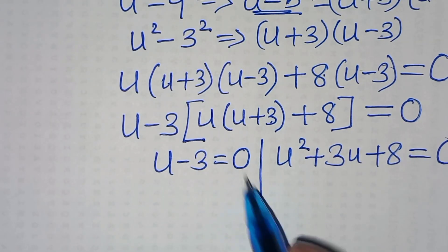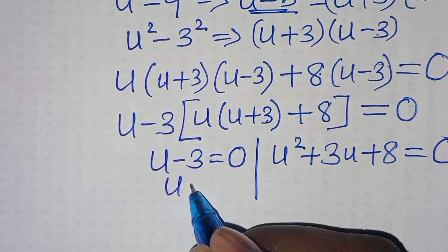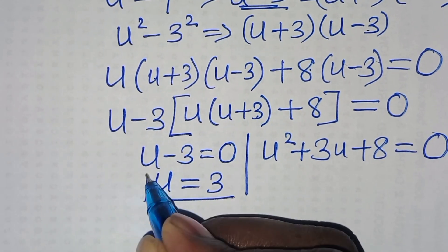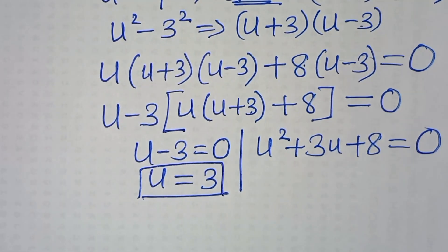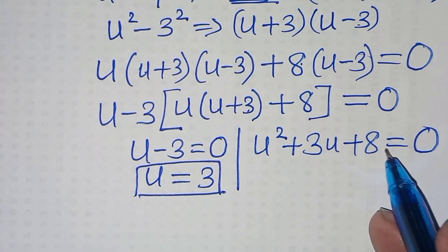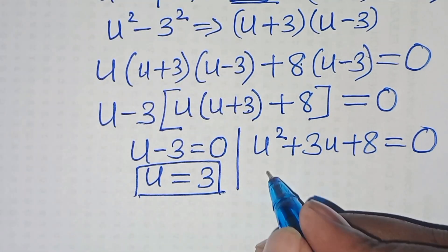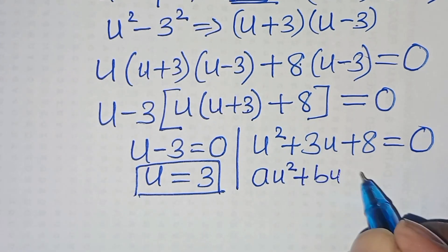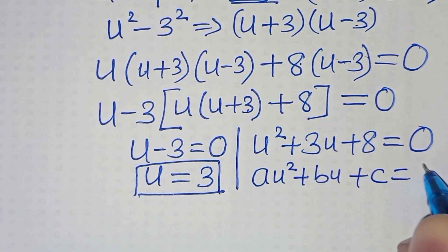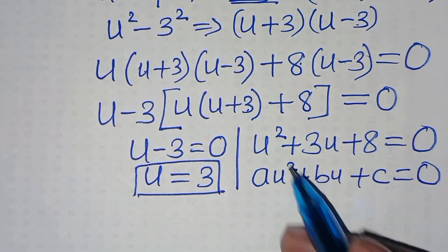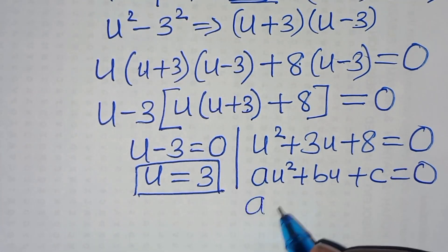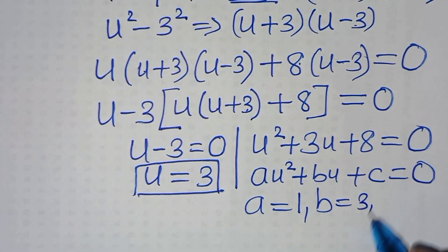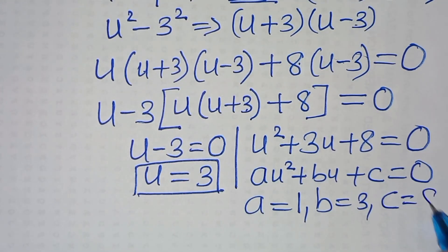From the first part, we have u minus 3 equals 0, so u equals 3. The second part is a quadratic equation of the form au squared plus bu plus c equals 0. From this quadratic equation, a is equal to 1, b is equal to 3, and c is equal to 8.